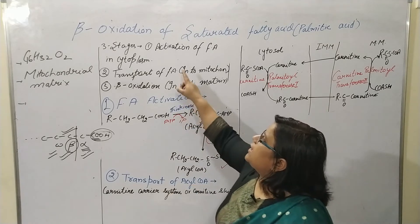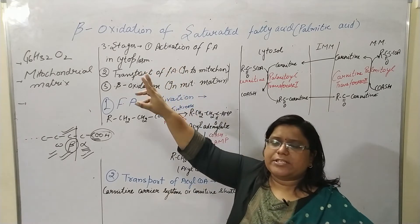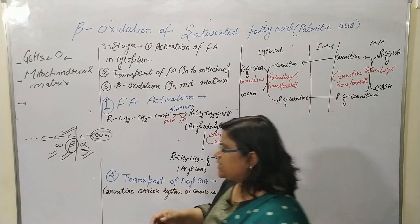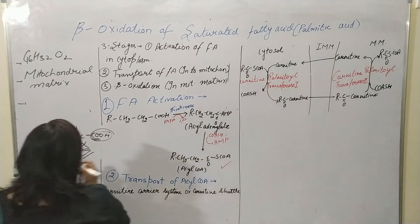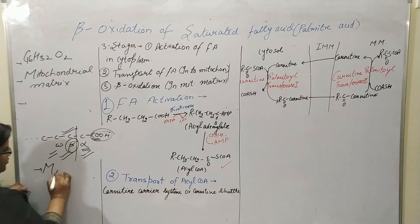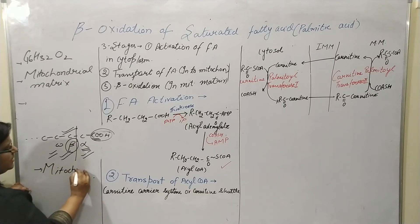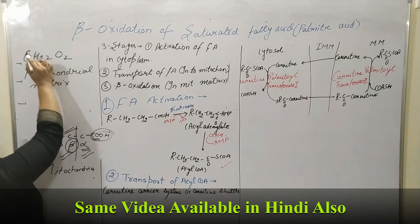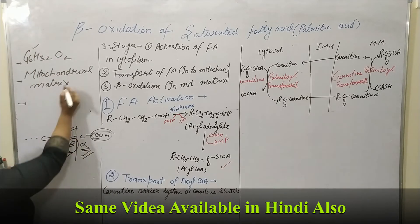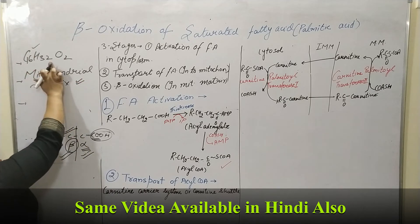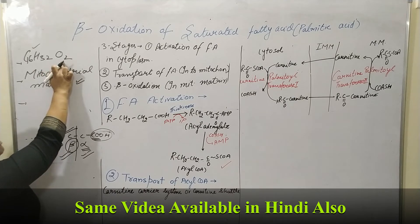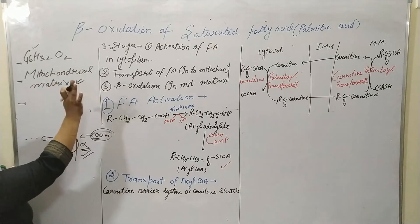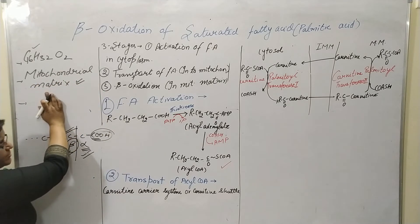The complete beta oxidation occurs in the mitochondria — specifically in the mitochondrial matrix. In your syllabus, the example used is palmitic acid, with formula C16H32O2. The site where beta oxidation takes place is the mitochondrial matrix.